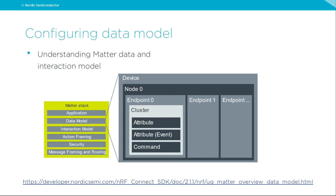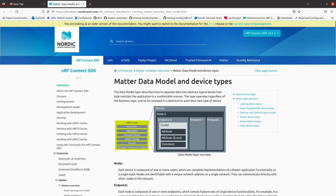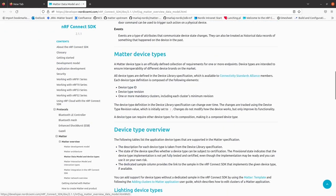Let's have a quick overview of what the data model actually is. To implement a particular device, Matter offers an abstraction model allowing you to configure abstract endpoints and clusters within those endpoints in a hierarchical structure. Each cluster may contain attributes, events, and commands that can be run on that particular cluster. All of this is needed to model the behavior of real appliances and real Matter devices. For more insight on the Matter data model, click the link in this slide for our documentation on Matter data model and device types.